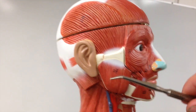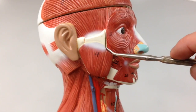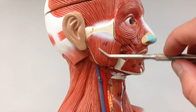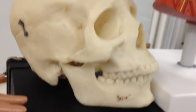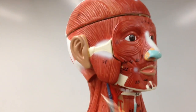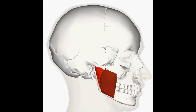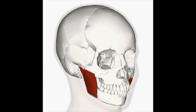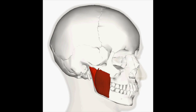Another muscle that's important for mastication is the masseter muscle. It's a flat muscle that has an origin on the inferior surface of the zygomatic arch, and it inserts on the lateral portion of the ramus of the mandible. It also elevates the mandible and protracts it, or moves it forward. You can feel this muscle when you clench your jaw — just place your fingers inferior and anterior to your ear, clench your jaw, and you should be able to feel it.